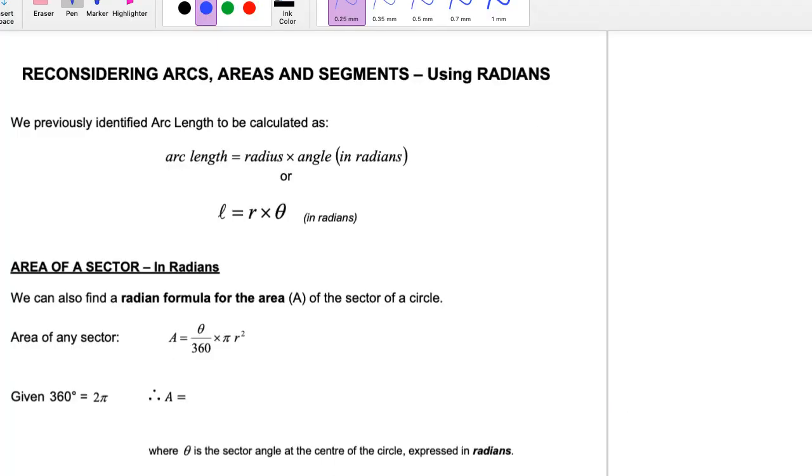In this video we're going to re-look at our formulas for arc length, area of a sector, and area of a segment now that we're using radian measure. As we previously looked at, a radian, the angle theta in radians, is the ratio of the arc length to the radius of the circle that we're dealing with.